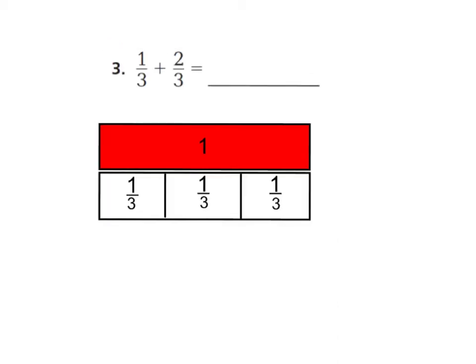Let's look at number 3. Number 3 says, 1 third plus 2 thirds equals, well, let's try to solve this without the model. We'll come back to the model in a second. I know that my denominators are both 3. So my denominator for my answer is going to be a 3. And so, since I have like denominators, all I need to do is add the numerators. 1 plus 2 equals 3. So, 3 thirds is my answer, which is equal to a whole.